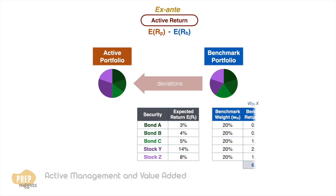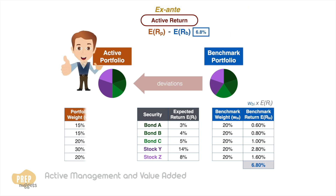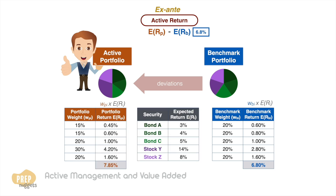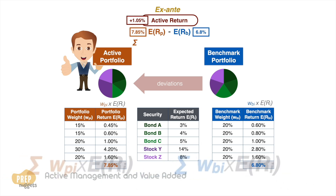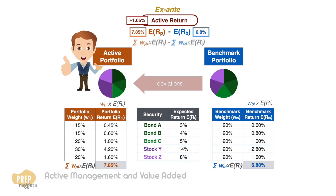The expected return of the benchmark is 6.8%. Let's say an active manager decides to deviate from the weights of the benchmark. Based on the expected returns of each security, the expected return of the active portfolio is 7.85%. The ex ante active return of the portfolio is therefore 1.05%. We can express the formula for active return in this form.